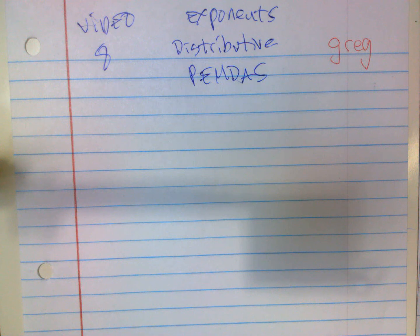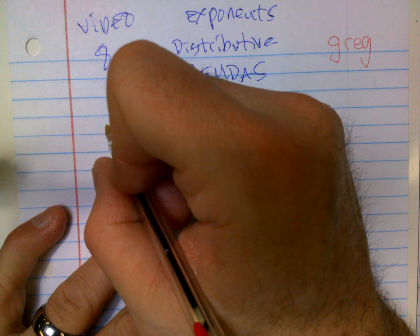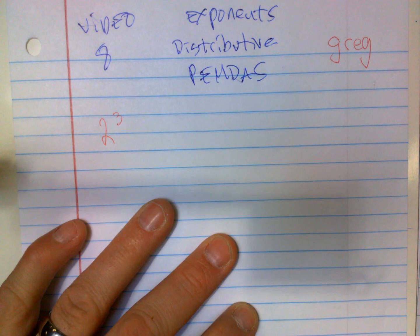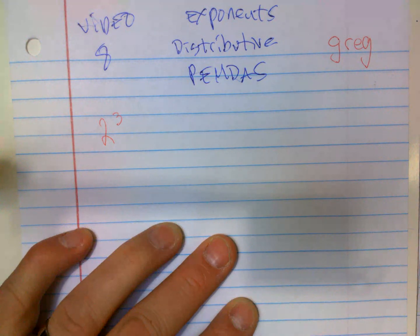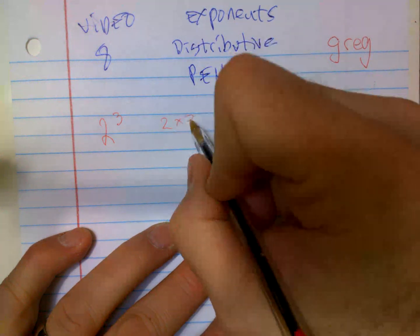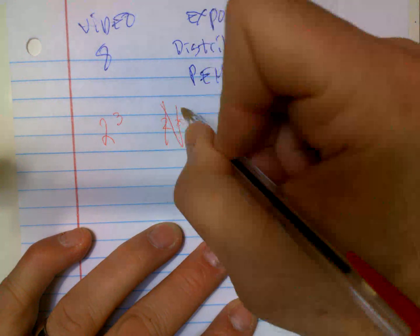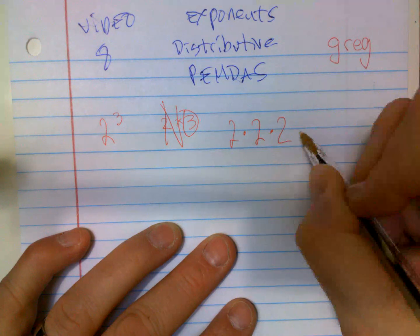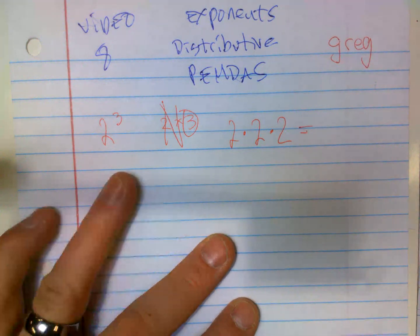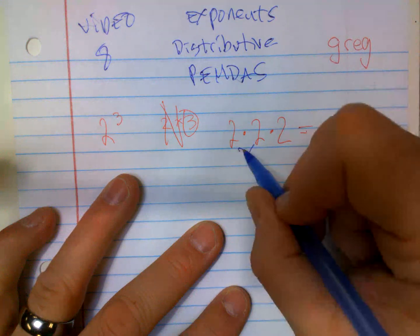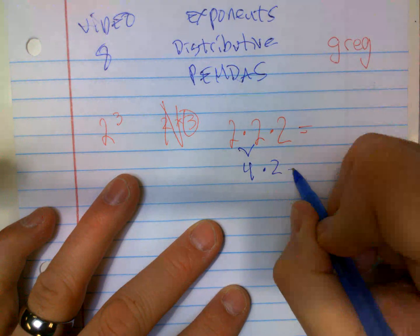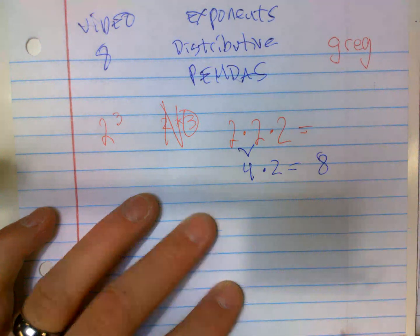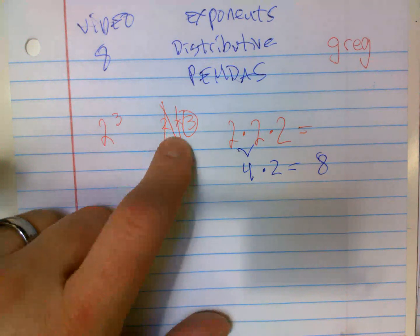Really quickly, exponents. Anytime you have 2 with a little 3, that does not mean 2 times 3. That means 2 times itself 3 times. So if you get a whole bunch of them or something, you just do the first two is 4, and I still have times 2 left. The answer is 8.